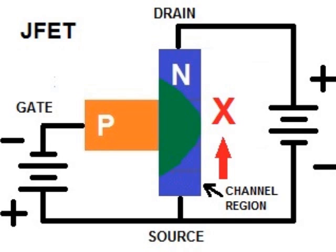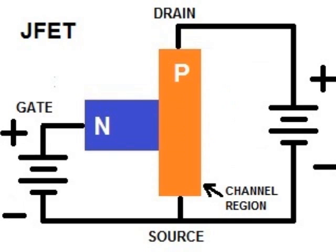One other thing, it's possible to have the channel made of P material instead of N material, and we have a gate made of N material instead of P material. This is called a P channel JFET, and it works in exactly the same way that the N channel JFET does, except that the polarities are reversed.